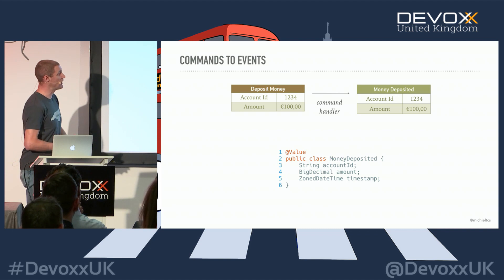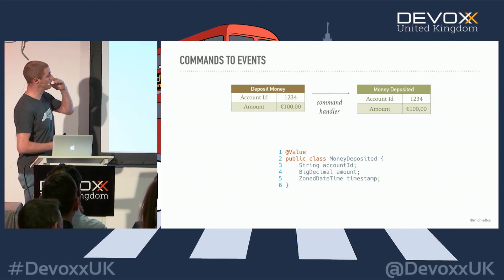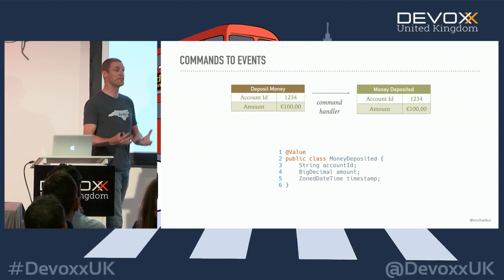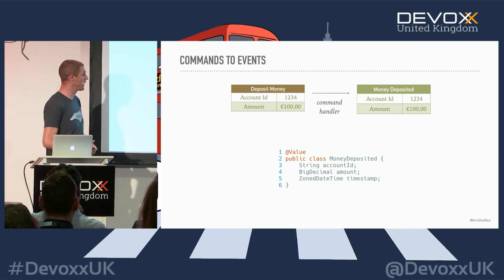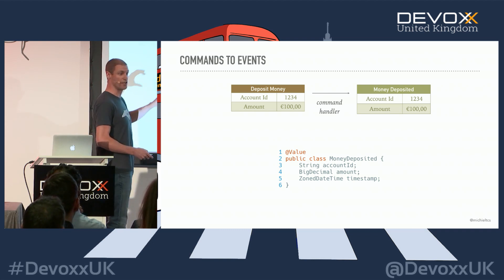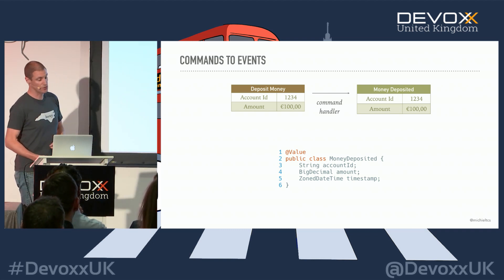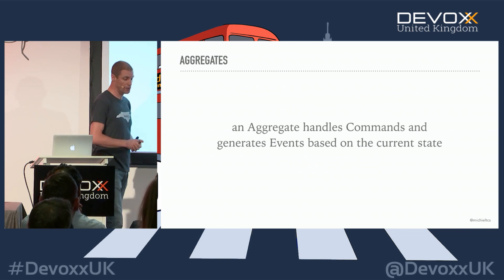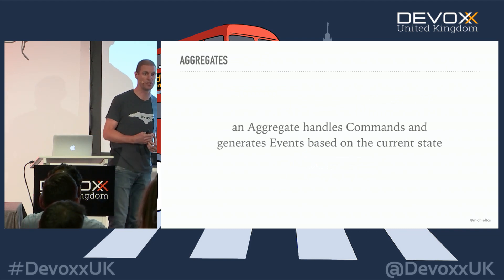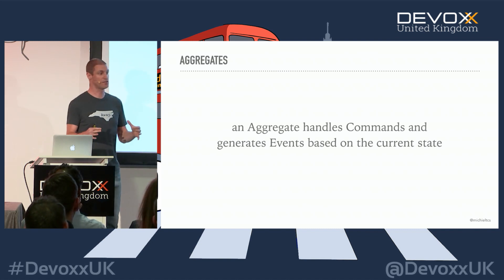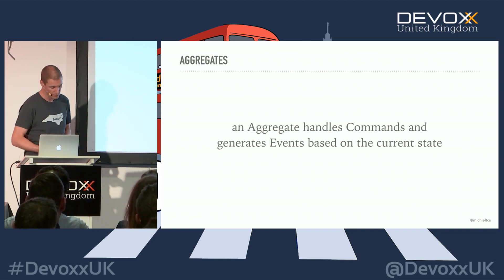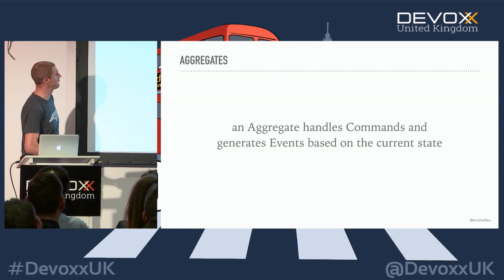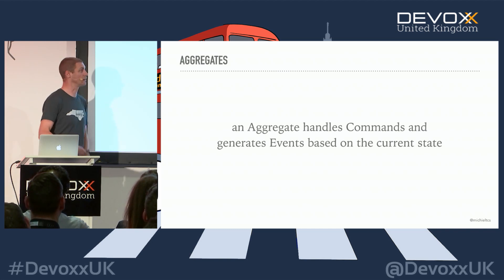A command handler turns the command into an event, at which point the thing happened. The command is a request for something to happen, and once it's turned into an event it actually happened — recorded as a fact of history. The event class name changes to past tense: instead of the imperative form, it becomes 'money deposited.' This is not something we change anymore, because it has happened.